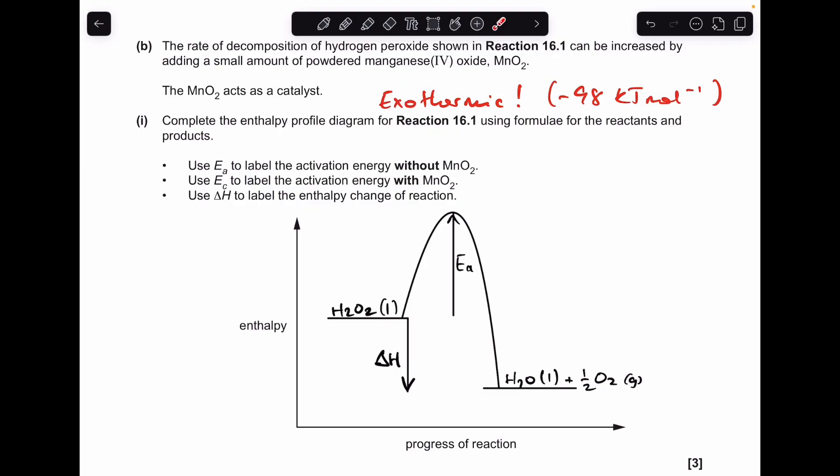And so all we need to do now is the second curve. So I'll do this in a different colour. We'll go red. And it just needs a lower activation energy, a lower rise. So, and then we'll just put an arrow like that, and that's Ec.